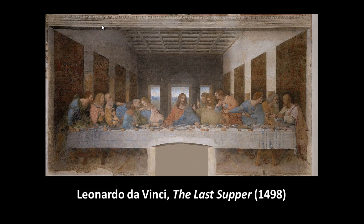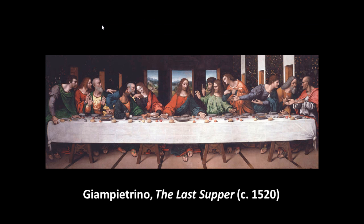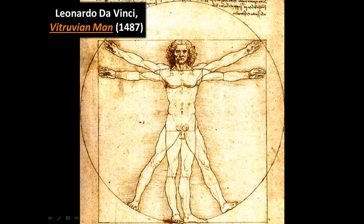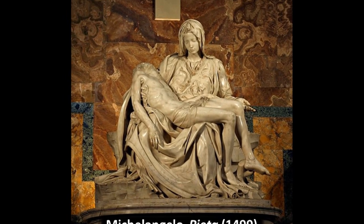The Last Supper has launched all kinds of conspiracy theories. It was an experiment of da Vinci's and has been very hard to preserve — this version is a copy by one of his students, which has survived better. Once again you see balance: the Lord at center, six disciples on each side, a biblical theme, and clear 3D perspective in the room. Leonardo's Vitruvian Man, from his sketchbook, reflects humanism's desire to study and sketch the human body.